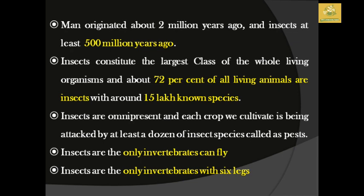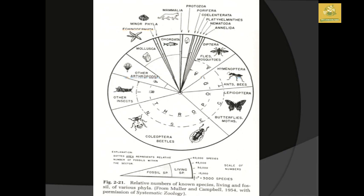Man was originated around two million years ago, but insects were formed at least around five million years ago. Insects constitute the largest class of living organisms — about 72% of all living organisms in the world are insects. Up to now, around 15 lakh species have been characterized and placed in taxonomic classification. Insects are omnipresent and each crop we cultivate is attacked by at least dozens of insect species known as pests. Insects are invertebrates that can fly and also have six legs.